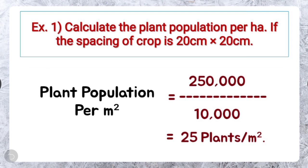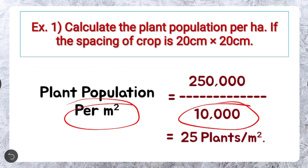If asked in the example for plant population per meter square, then just divide it by 10,000. That is, plant population per meter square will be 2,500,000 divided by 10,000 — that is 25 plants per meter square.